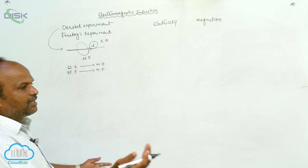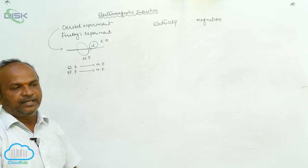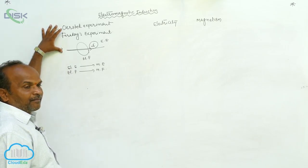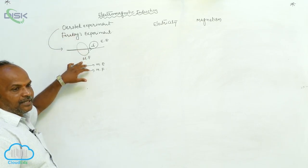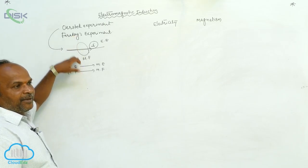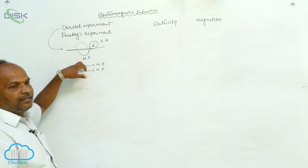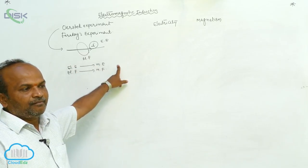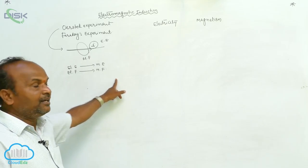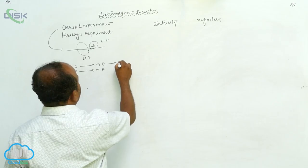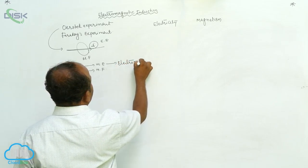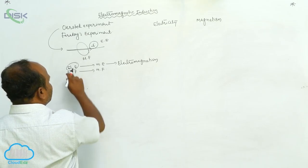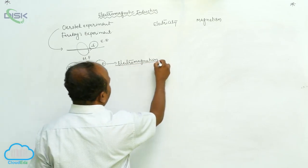Therefore, there is a relation between electrical energy and magnetic energy, and between electric field and magnetic field. Because of current, there is a magnetic field. The phenomena in which electrical energy is converted into magnetic energy — or electric field is converted into magnetic field — is called electromagnetism.